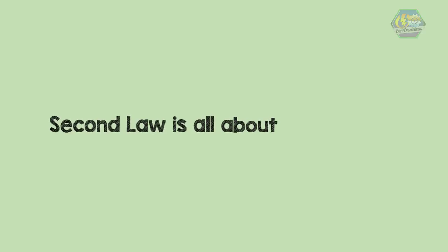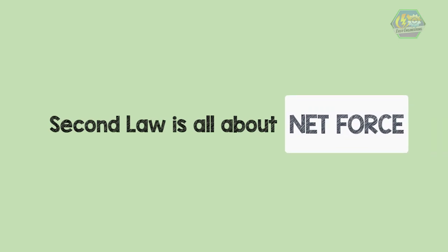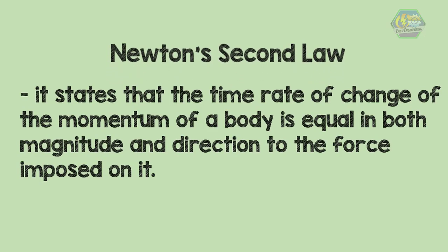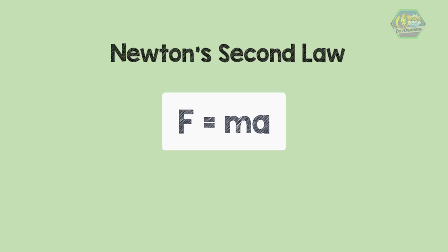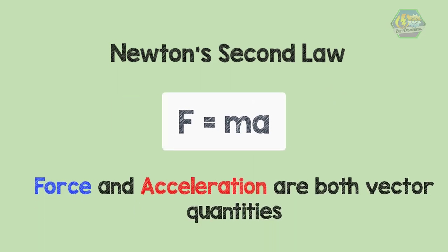Now for Newton's second law, we're going to talk about the importance of net force. Newton's second law talks about the changes that a force can produce on the motion of a body. It states that the time rate of change of momentum of a body is equal in both magnitude and direction to the force imposed on it. For a body whose mass is constant, it can be written as F equals MA, where F is the force and A is the acceleration — both are vector quantities.